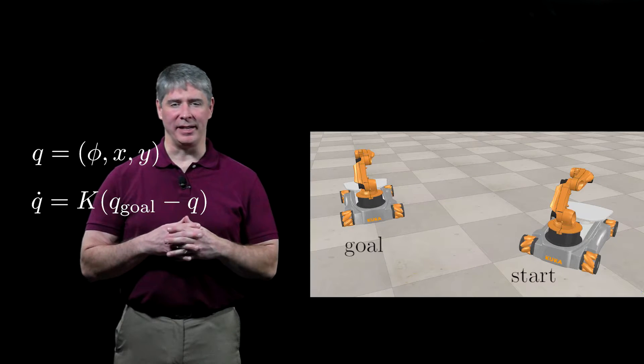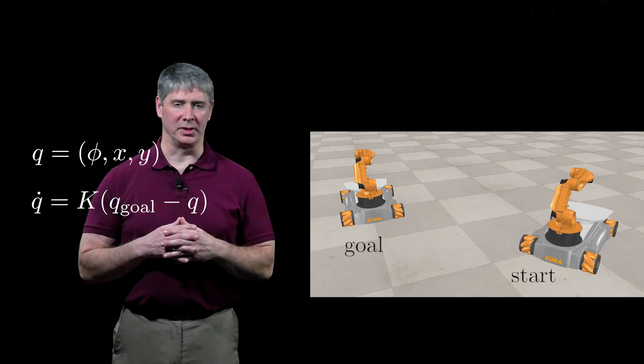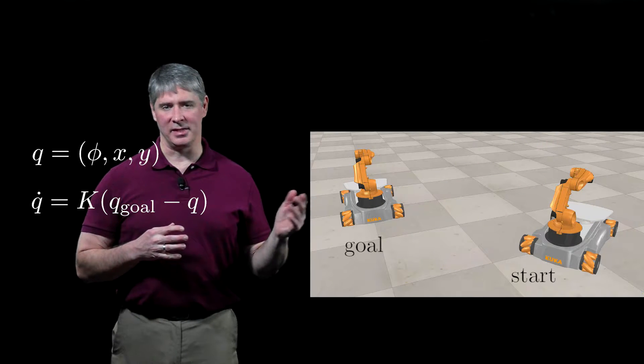We could choose K to be the identity matrix, but as long as it's positive definite, the configuration error will decay to zero, as seen in this animation.